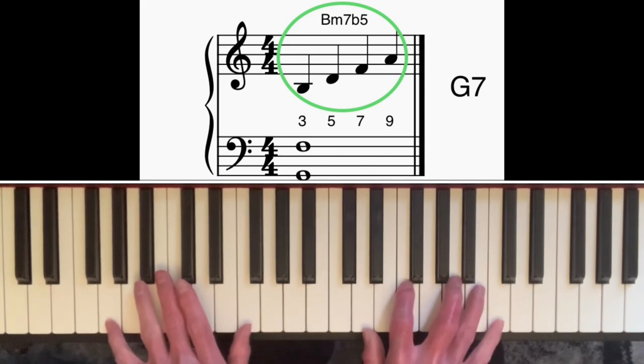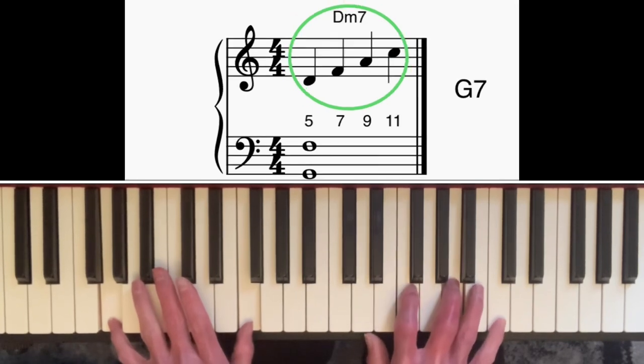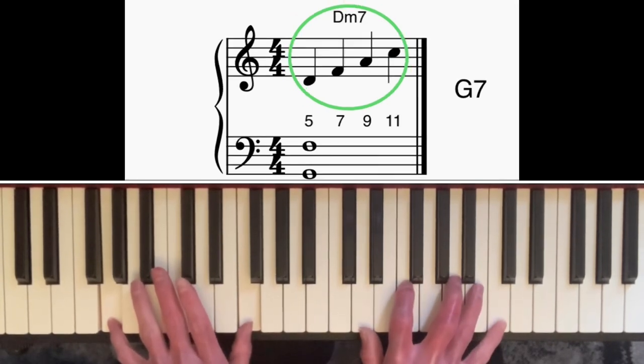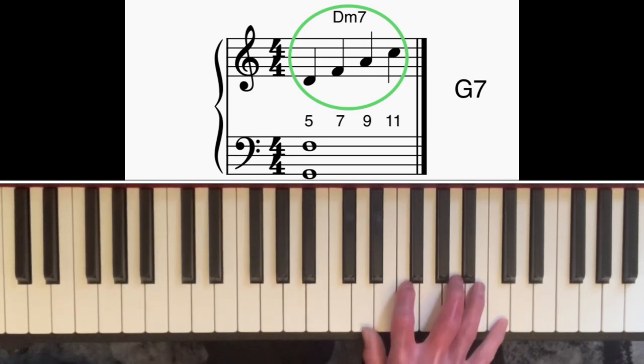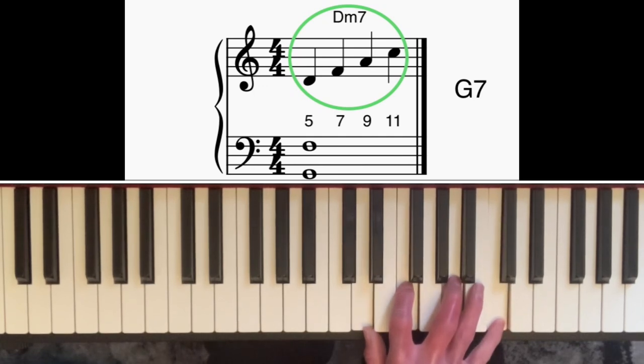The second arpeggio I'm going to use is starting on the fifth of the G7 chord. Looking at those notes in terms of G7, we've got the fifth, the seventh, the ninth, and the eleventh. But on their own, we can think of that as a D minor seven chord, which is chord two, which usually precedes chord five in a two-five-one progression.